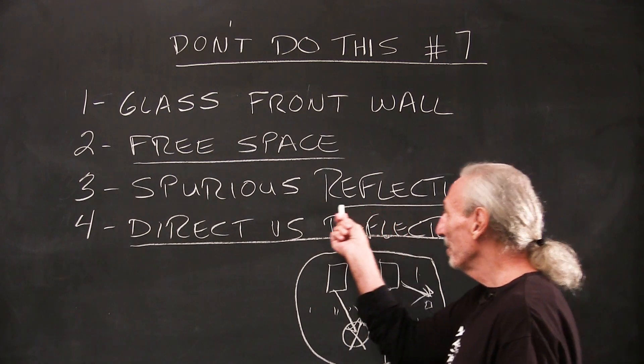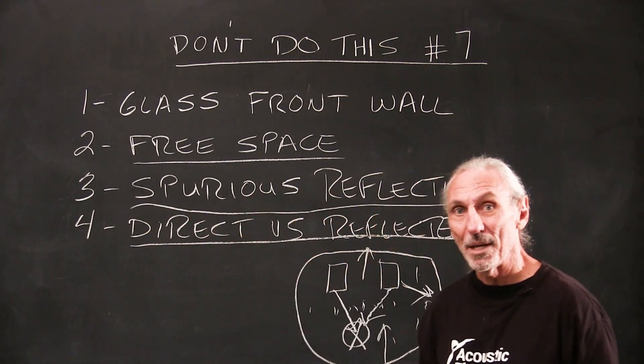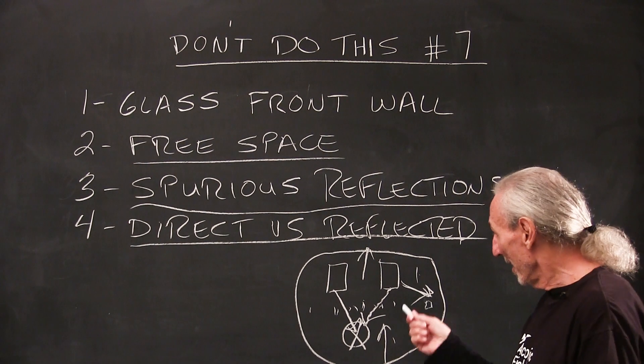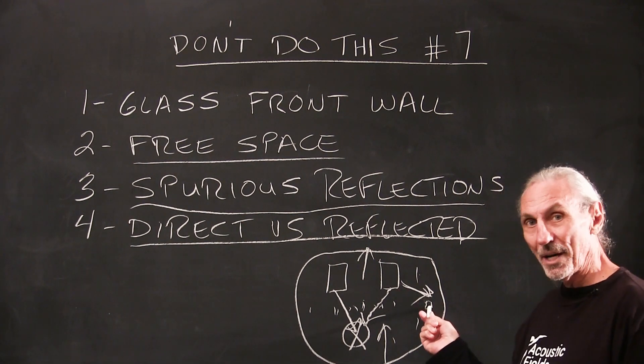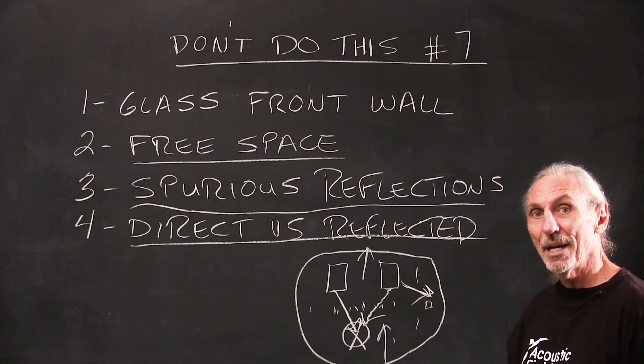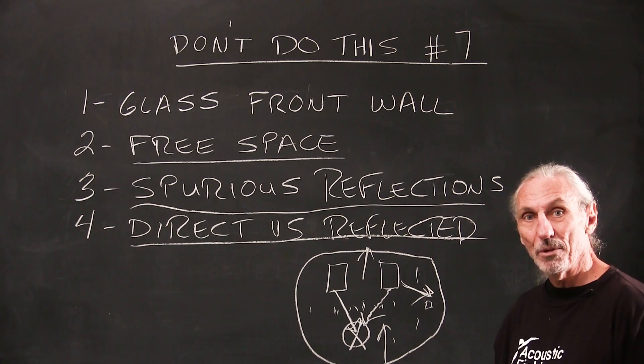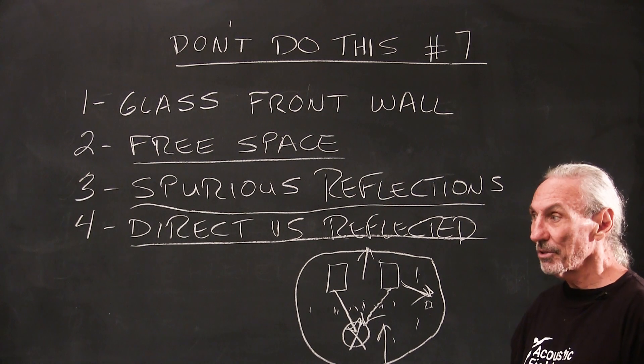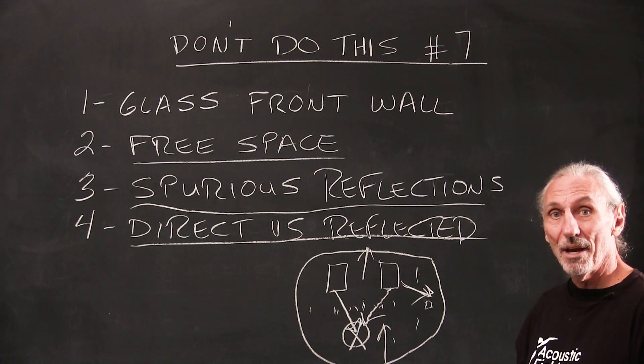But spurious reflections are really our enemy because we can't control that. When this sidewall reflection strikes a lamp or a table over here, we're done. We can't control that. I mean, we don't know what direction the reflections are going and we shouldn't have to worry about that.